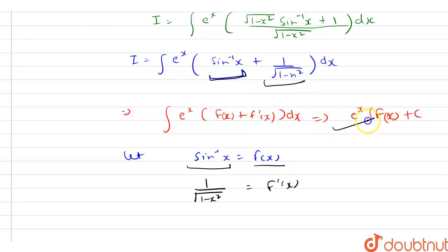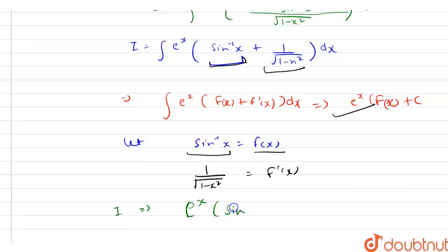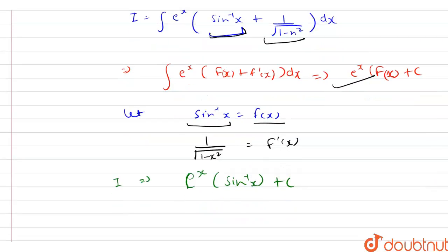So from here we can reuse this identity as our final answer. Our answer will be I is equal to e raised to power x into sine inverse x plus C. So this is our final answer.